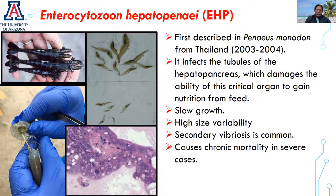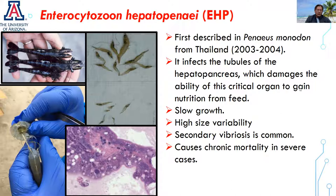Sometimes it is also associated with soft shell in the animals. Now, EHP is one of the most important pathogens in the shrimp industry worldwide. It has been reported since 2003-2004, first in Penaeus monodon, and later on in Penaeus vannamei. Basically, the target organ is the hepatopancreas, where as soon as it starts causing severe infection, it damages the ability of the hepatopancreas to gain nutrition from feed. It causes slow growth and high size variability.